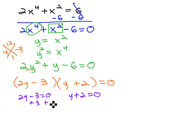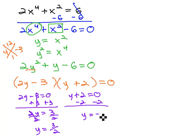And we can quickly solve these for y, adding 3 to get 2y equals 3, and then dividing by 2 to get y equals 3 halves, subtracting 2 from the other equation to give us y equals negative 2.